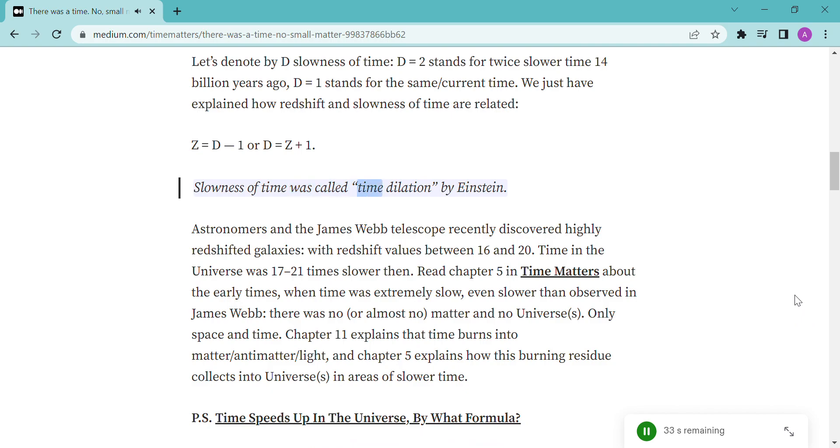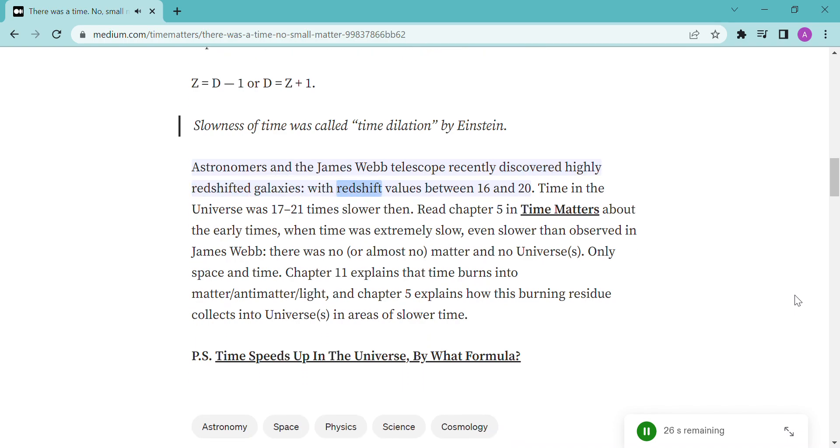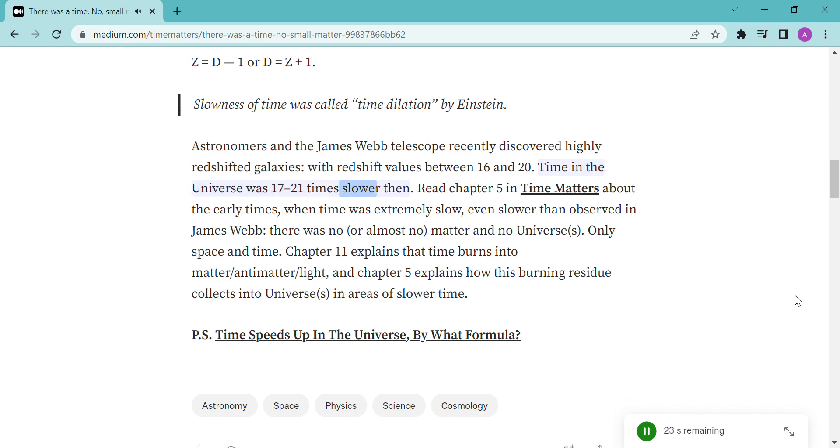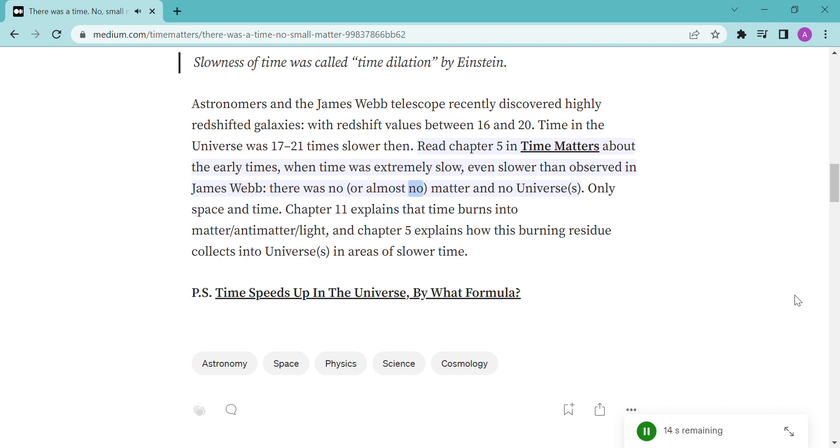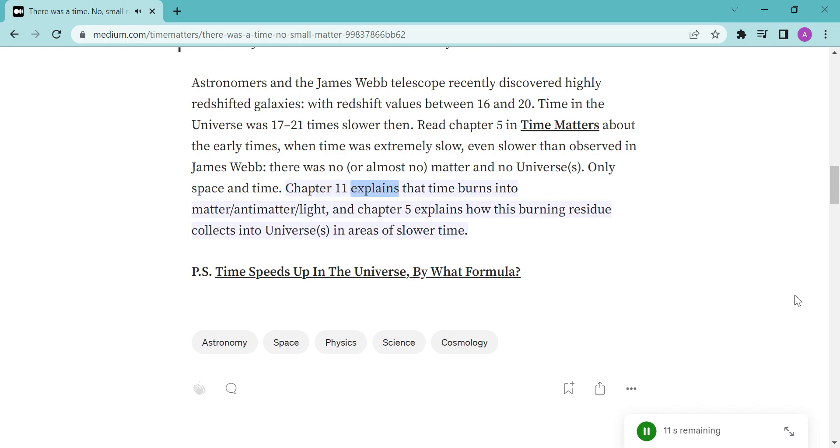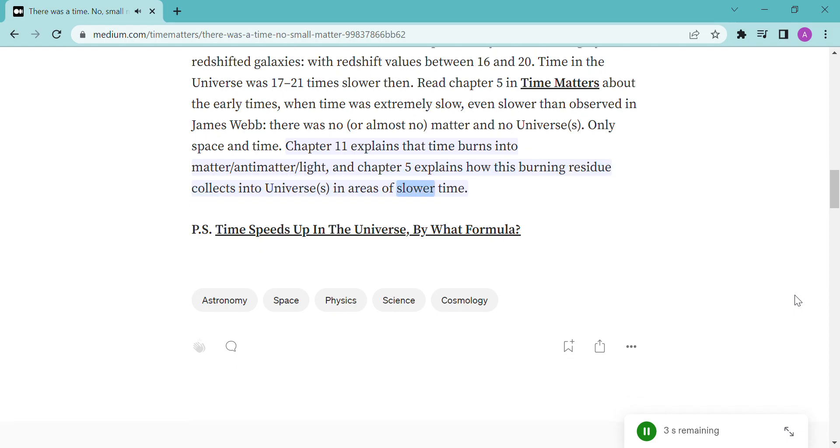Slowness of time was called time dilation by Einstein. Astronomers and the James Webb Telescope recently discovered highly redshifted galaxies with redshift values between 16 and 20. Time in the universe was 17 to 21 times slower then. Read chapter 5 in Time Matters about the early times, when time was extremely slow, even slower than observed in James Webb. There was no, or almost no, matter and no universes, only space and time. Chapter 11 explains that time burns into matter, antimatter, and light. And chapter 5 explains how this burning residue collects into universes in areas of slower time.